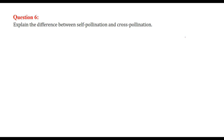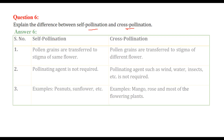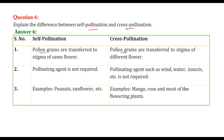Difference between self-pollination and cross-pollination: in self-pollination, pollen grains are transferred to the stigma of the same flower and no pollinating agent is required. In cross-pollination, pollen grains are transferred to the stigma of a different flower, requiring agents like wind, water, or insects. Examples of self-pollination: peanuts, sunflower. Examples of cross-pollination: mango, rose, and most flowering plants.